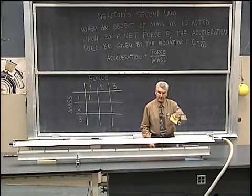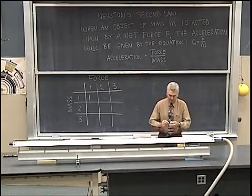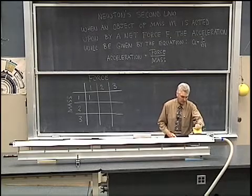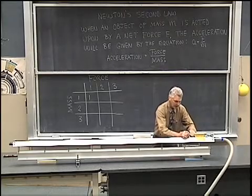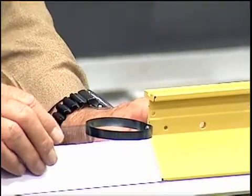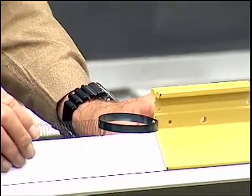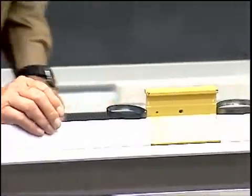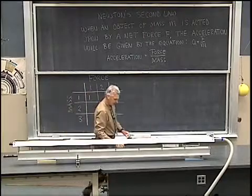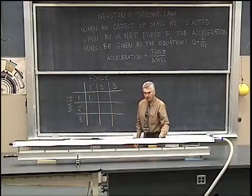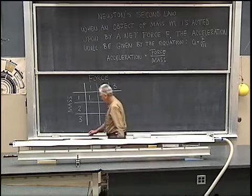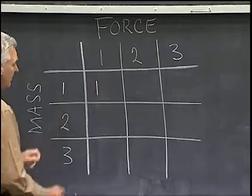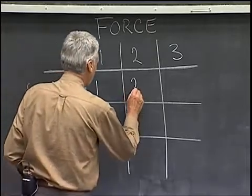Next, what I'm going to do is take that same one unit of mass, and this time I'm going to apply a force of twice as much — two units of force on one unit of mass. Now let's measure the acceleration. With two units of force on one unit of mass, we observe that we would get two units of acceleration. So with a force of two on a mass of one, we get an acceleration of two.